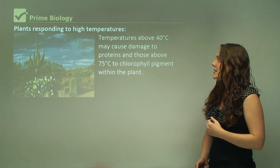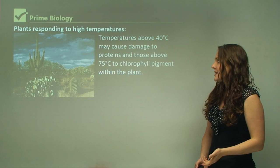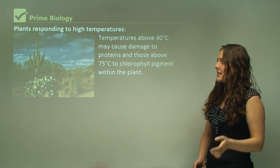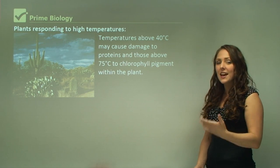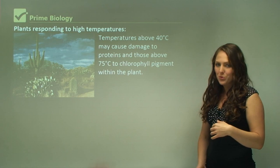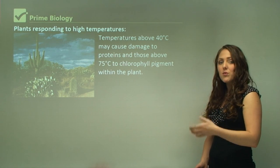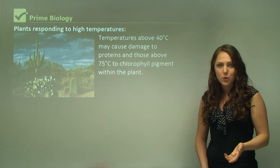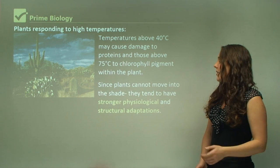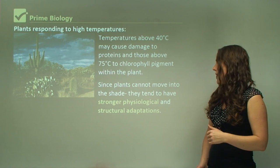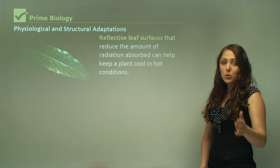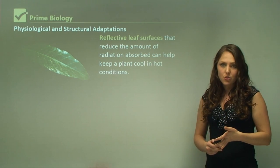Temperatures above 40 degrees may cause damage to proteins, and those above 75 degrees cause damage to chlorophyll pigment within the plant. Desert plants can withstand much higher temperatures than alpine plants. Desert plants like cacti can survive within a higher temperature range of 40 degrees Celsius. Since plants cannot move into the shade, they tend to have stronger physiological and structural adaptations.